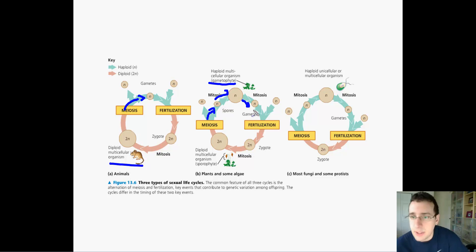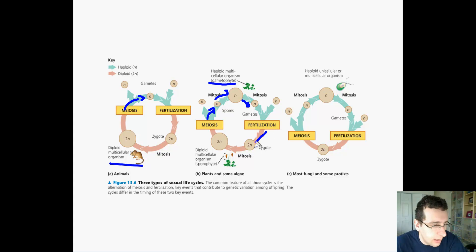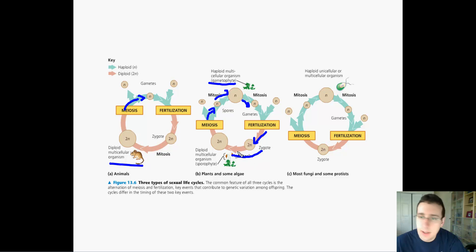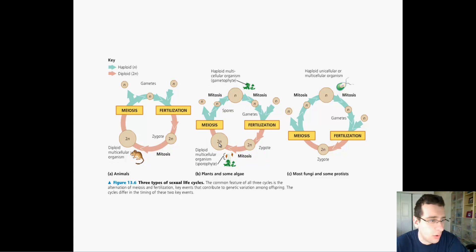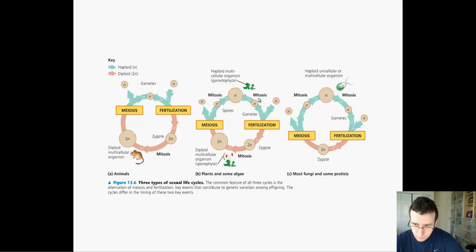The gametophyte produces gametes by mitosis — it can't do meiosis, because that would reduce what's already reduced. So by mitosis it splits to make gametes. These gametes will be either seeds or pollen, and they will join through fertilization to make a zygote, which is a 2N organism. That becomes a seedling, which multiplies by mitosis to restore the diploid multicellular organism we recognize as the plant — the sporophyte. The basic difference is the formation of a spore through meiosis, with the spore then undergoing mitosis to form the gametes.